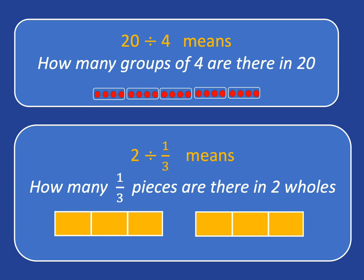in each of the wholes, there are 3 thirds. And so in 2 wholes, there will be 2 times 3 third pieces. And there you can see why 2 divided by 1 third gives you 2 times 3 over 1.